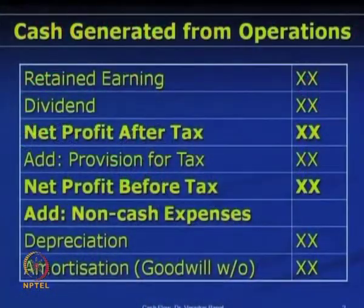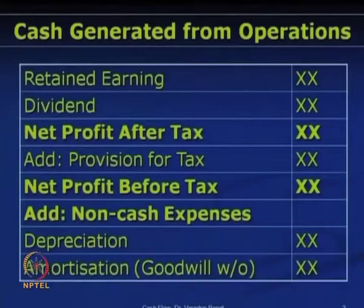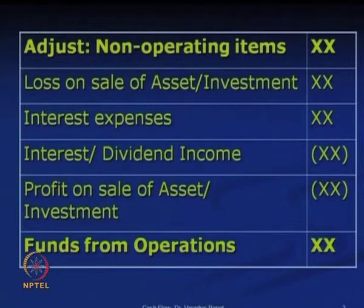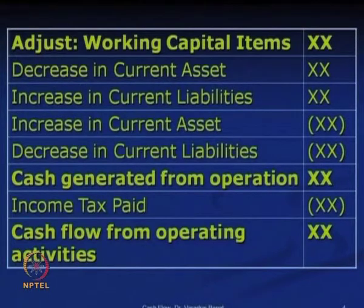Let us look at the formats. The first item is cash generated from operating activities, shown using the indirect method. We start with profit, then adjust for non-cash items, then adjust for non-operating items — here we get funds from operations. Then we adjust for working capital items like current assets and current liabilities. The total you get is cash generated from operations, from which we deduct income tax to get cash flow from operating activities.